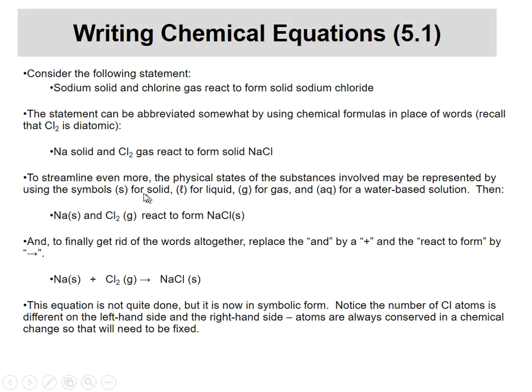So all I've done going from first line to the second line down here is I've replaced the words of the materials with their actual chemical formulas. Now, to make it a little bit better, instead of having to write solid and gas and solid over here, what we can do is abbreviate that. So if sodium's a solid, in parentheses, we put an S for solid. Chlorine's a gas, we put a G for gas. NaCl is a solid, we put an S for solid. And if you ever have a liquid, you'd use an L. And sometimes we have solutions, we use aq, which stands for aqueous, a water-based type of solution. To get rid of even more words, we can get rid of the 'and' by using a plus sign, and we get rid of the 'react to form' by using an arrow. And now here is your balanced equation.